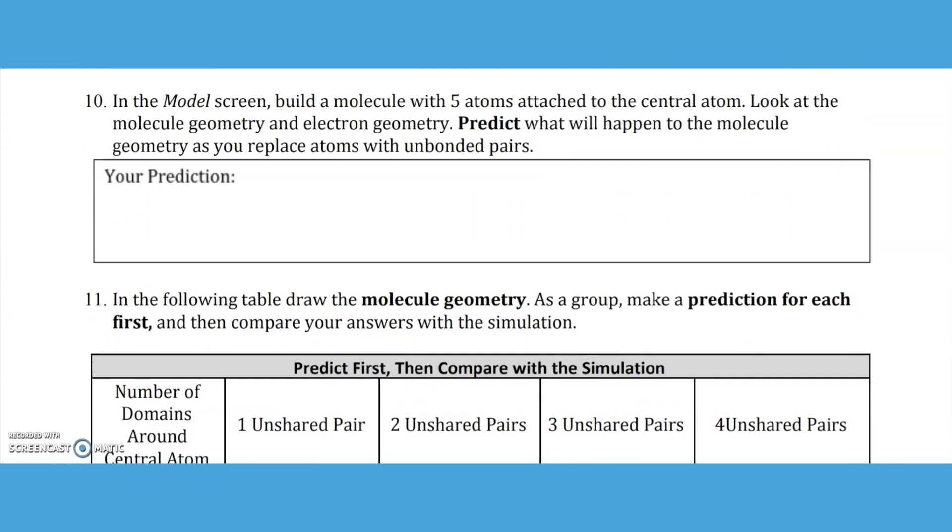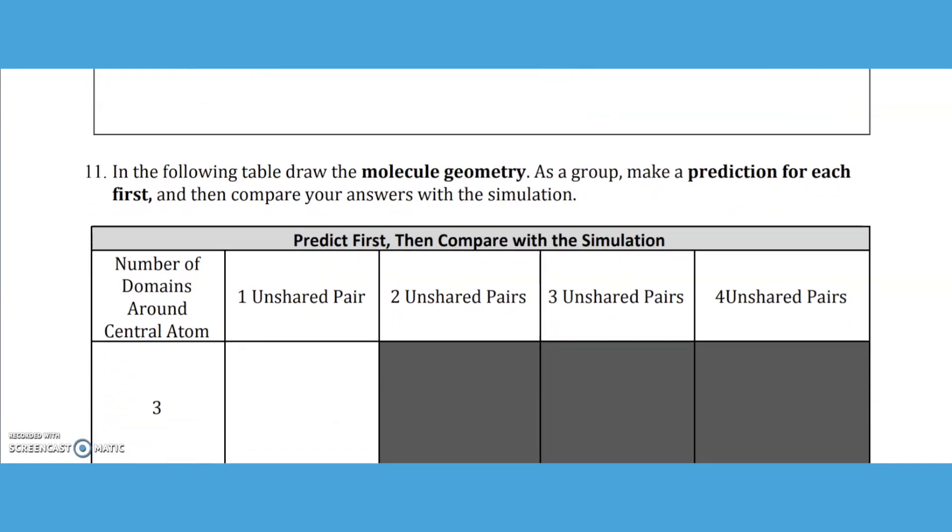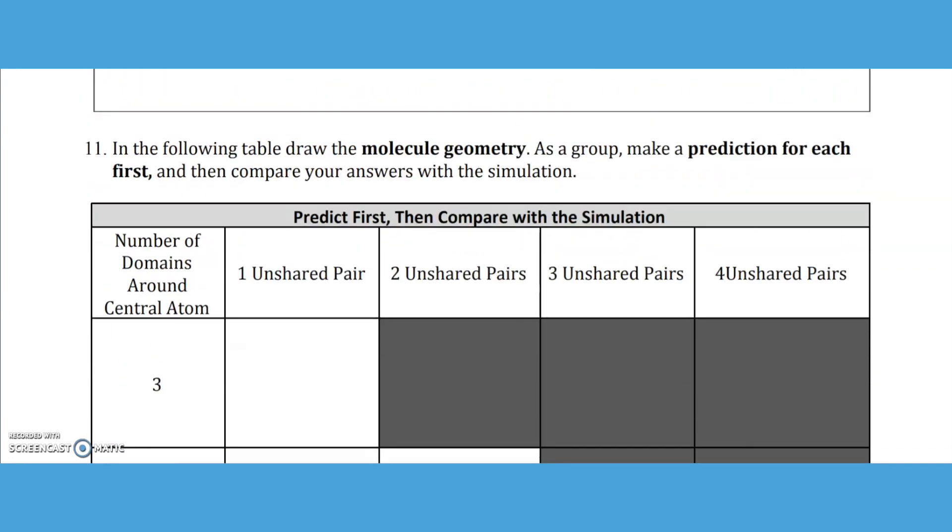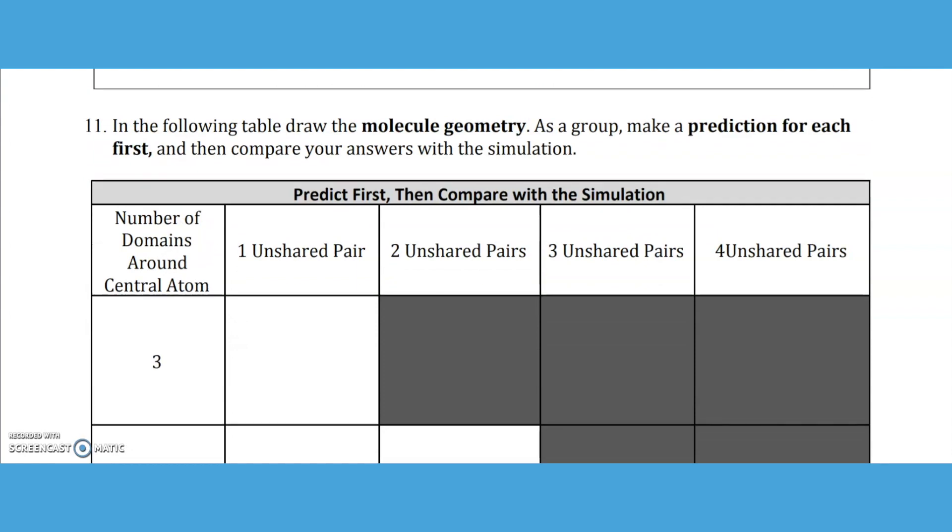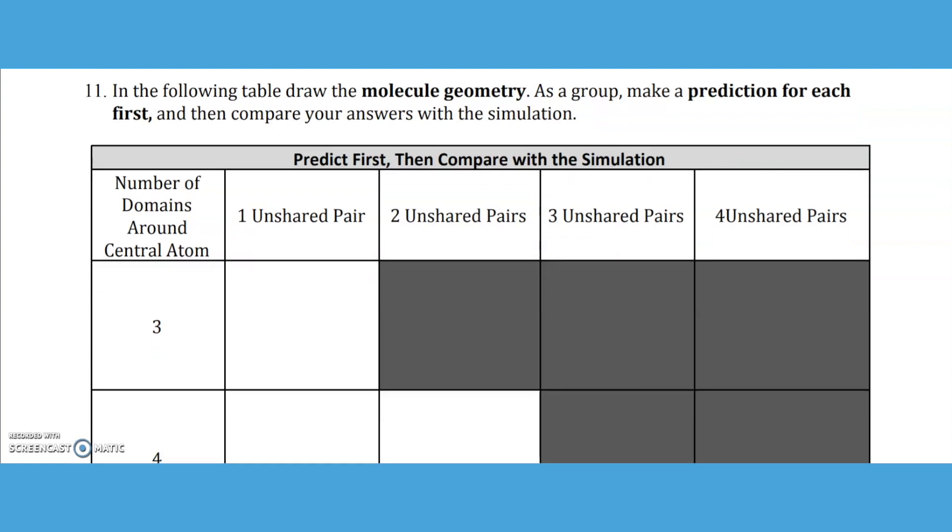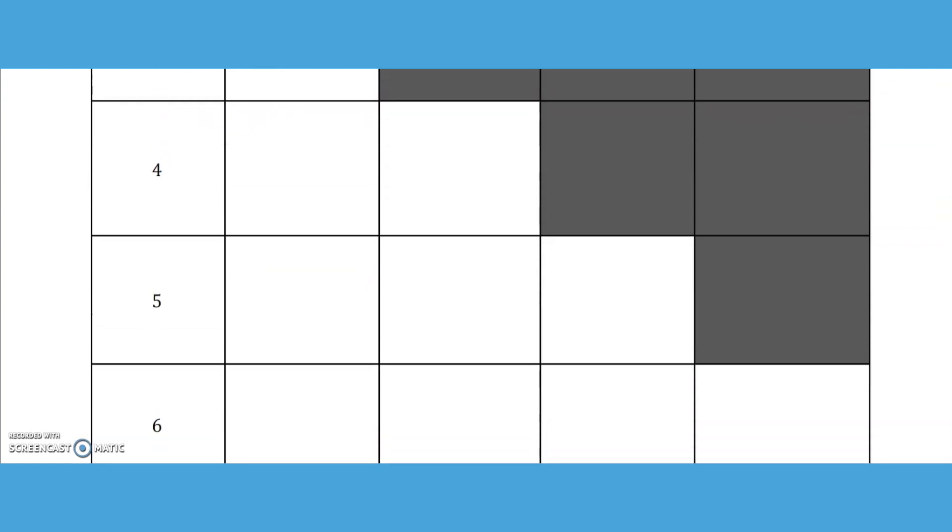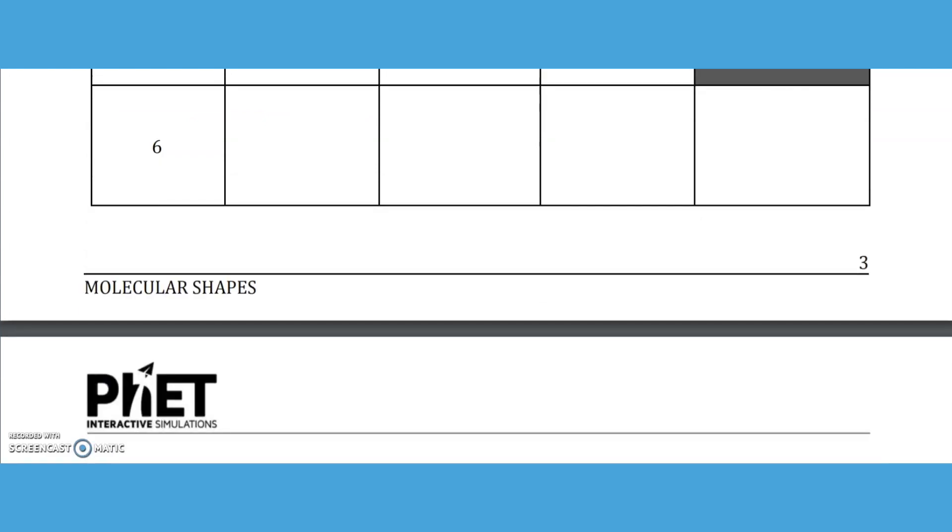In question 10, you will go to the model screen with the five atoms and make your prediction. Then you have to go through the molecular geometry to predict what's going to happen with one unshared pair, two unshared, three, and four unshared pairs.